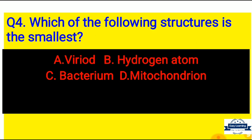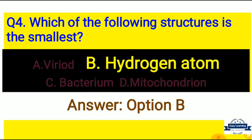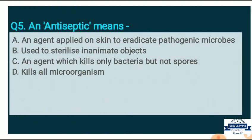Question 4: Which is the smallest structure? Option A: Viroid, Option B: Hydrogen atom, Option C: Bacterium, Option D: Mitochondrion. Correct answer is Option B — the hydrogen atom is the smallest structure.